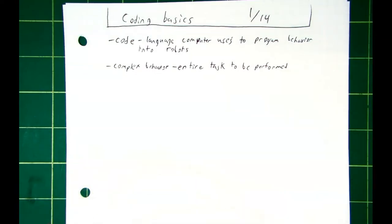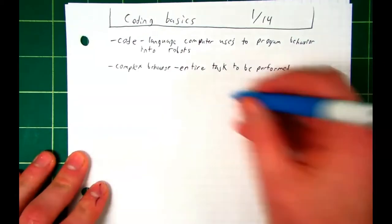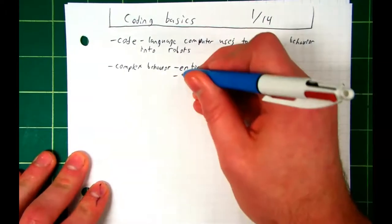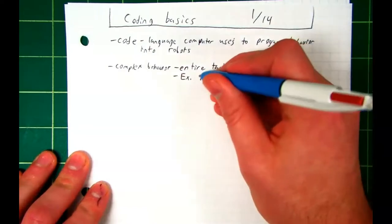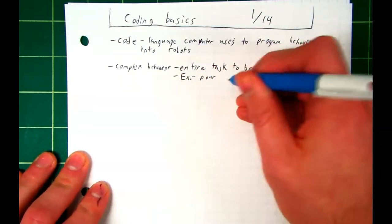And so there's a series of behaviors, smaller behaviors, that have to be done before you can do that. We would call this a complex behavior. So an analogy that we're going to use, our example, is pour a glass of milk.